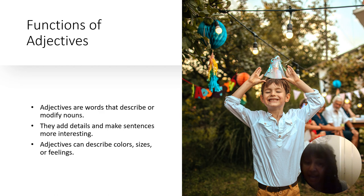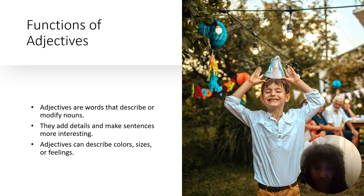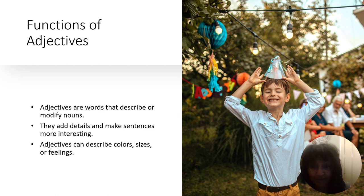Now let's talk about the functions of adjectives. Adjectives are words that describe or modify nouns. They add details and make sentences more interesting. Adjectives can describe colors, sizes, or feelings. Look at this little boy — it seems like he's at a birthday party. What words would you use to describe the boy, the setting, or the feelings? Take a few moments and talk about that with your partner.